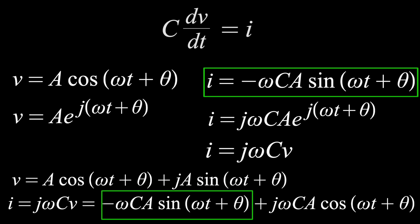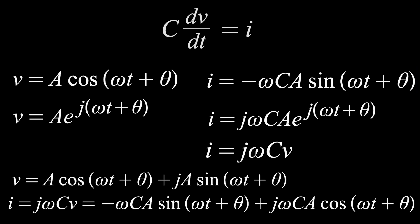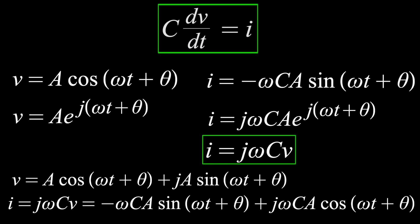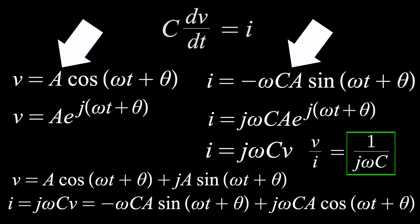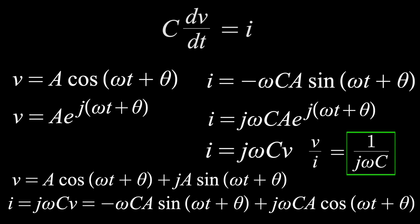Euler's formula did not make any of this any easier, but notice how by using it, we turned an equation that involves a derivative into one that doesn't. That's the key detail that makes this all useful for real circuits. Because now we can rearrange this equation and make a ratio of voltage and current. This is the impedance of a capacitor, which is kind of like resistance. The one over omega C part is the ratio in amplitude, but the j — the imaginary unit — tells us there will also be a phase shift of 90 degrees.